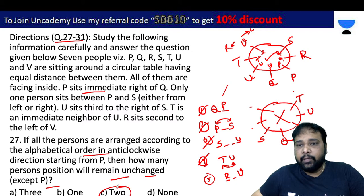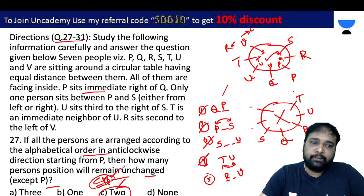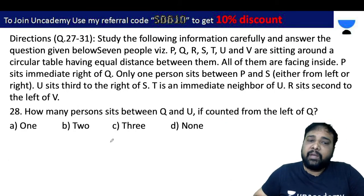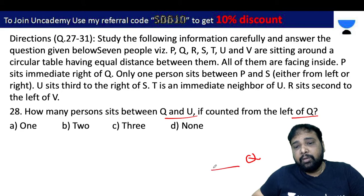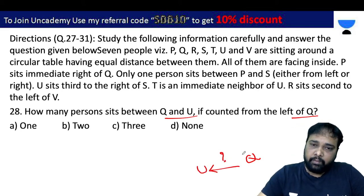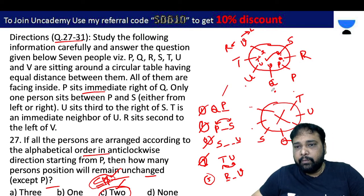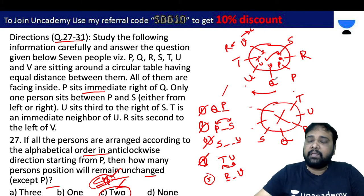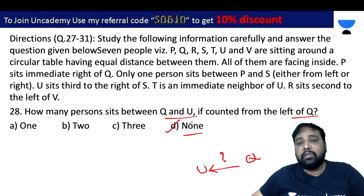T and U are in the same relative positions across both cases. How many persons sit between Q and U when counted from the left side of Q? Q to U on the left side — the answer is none. No one sits between them on that side.